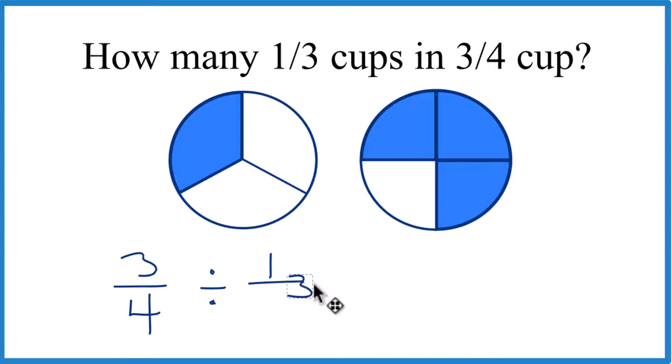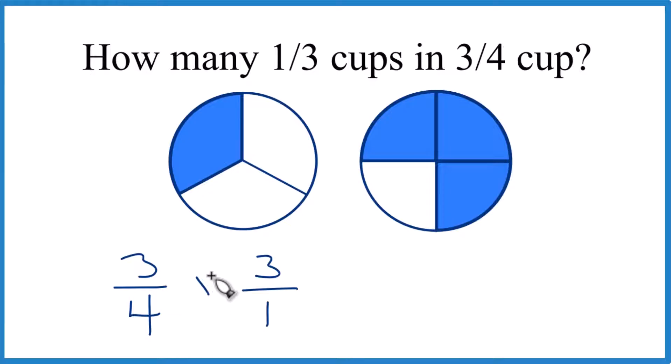What we'll do is take and move the three here and the one here. So three over one, that's the reciprocal of one-third. And instead of division, now we can just use multiplication. That makes it a lot easier.